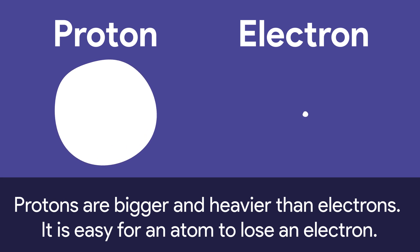We do know that a proton is almost 2000 times as big as an electron. Protons are much heavier — a proton weighs around one atomic mass unit, or AMU. An electron weighs just 0.0005 AMU. In other words, it's a lot easier for an atom to lose an electron because it's lighter — a little like brushing dust off the sleeve of your shirt.